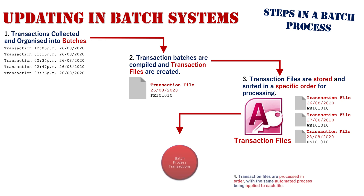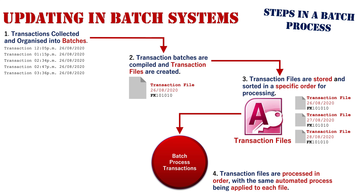The next step is to execute the batch process. The transaction files are processed in order with the same automated process applied to each file. Each transaction stored within these transaction files has the exact same method applied to it automatically by the system, which is why all transactions need to be stored and saved in exactly the same format for consistent processing.